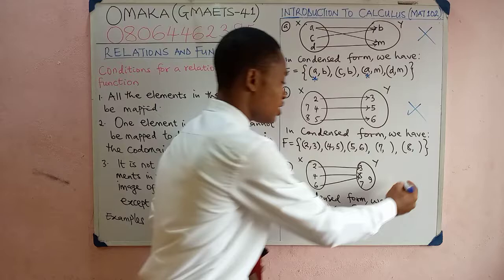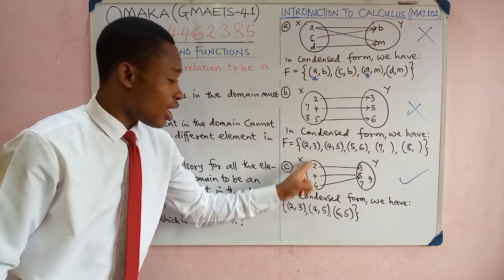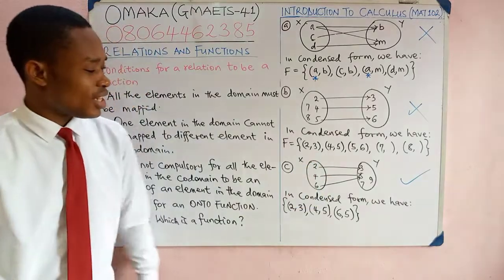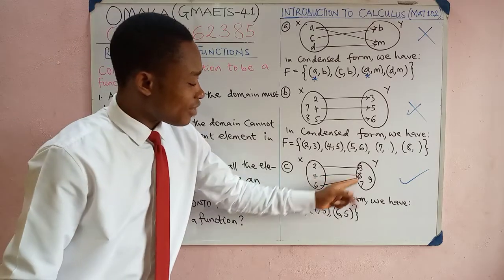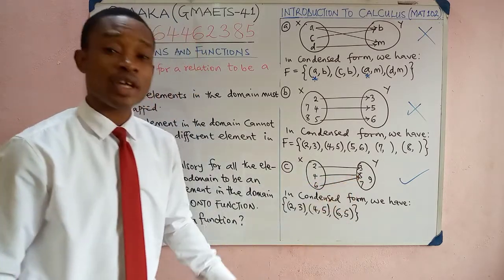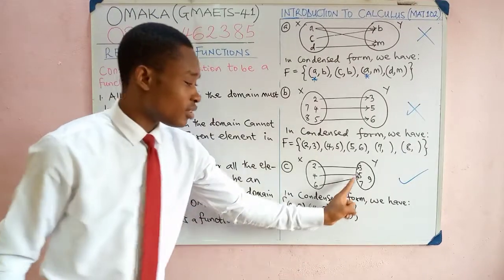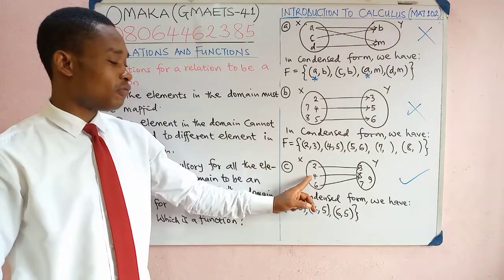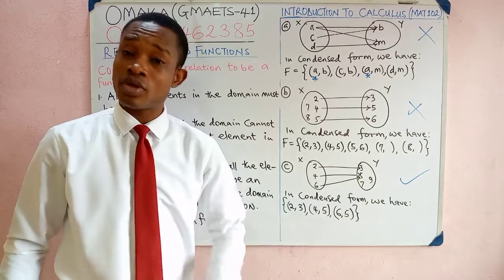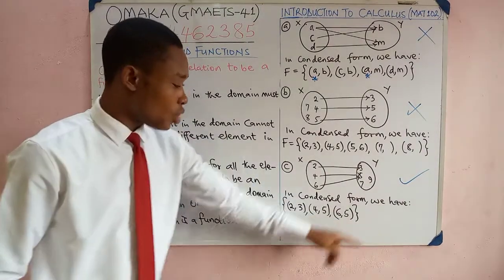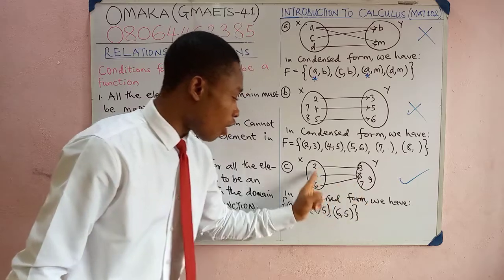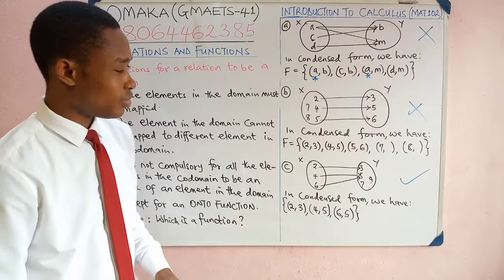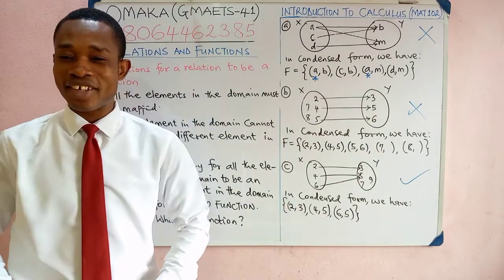Now look at the third one. Is it a function? Yes. Every element in the domain here was mapped, so all the sons have a father. You may notice that four and six are mapped to the same father — that is possible in real life: a father can have more than one child. Son four and son six having the same father is possible. In the condensed form, notice we did not extend this, because all the domains have been shown; you do not need to show the co-domain here. Always remember the son-father relationship.